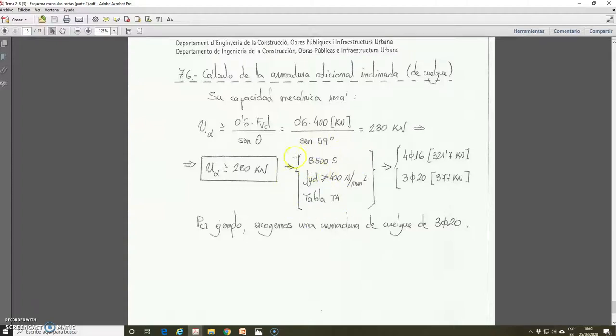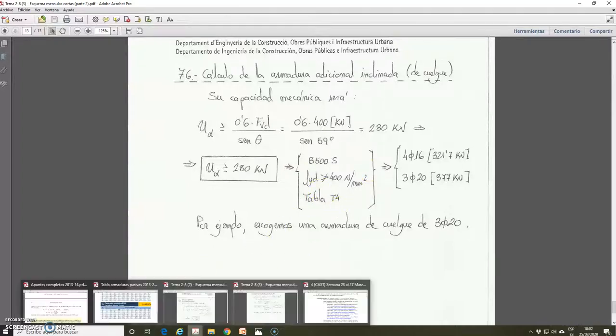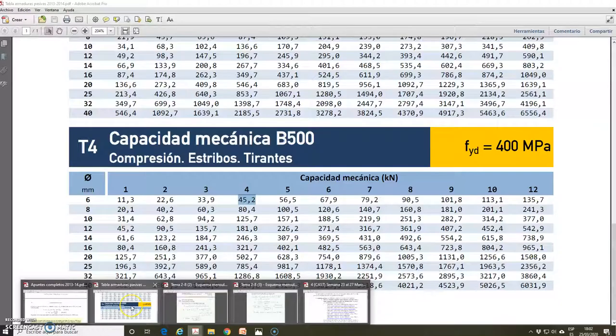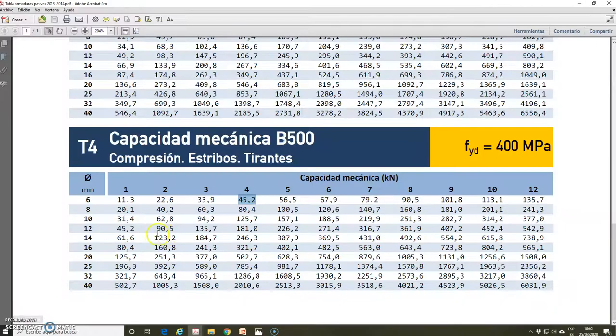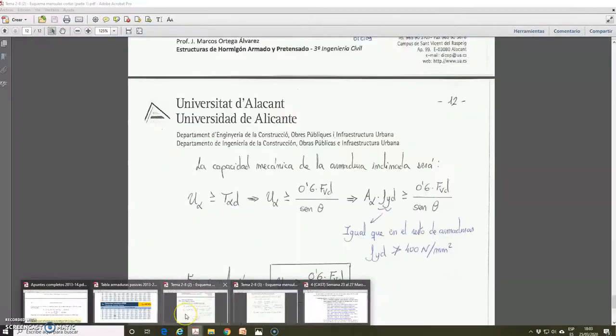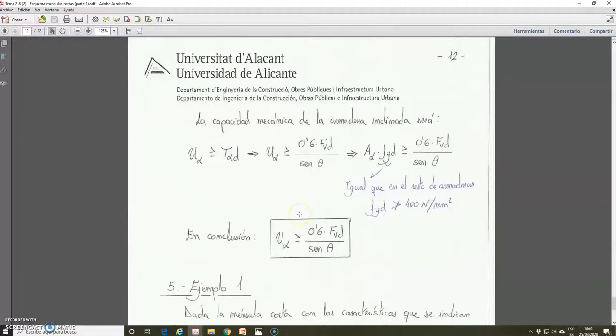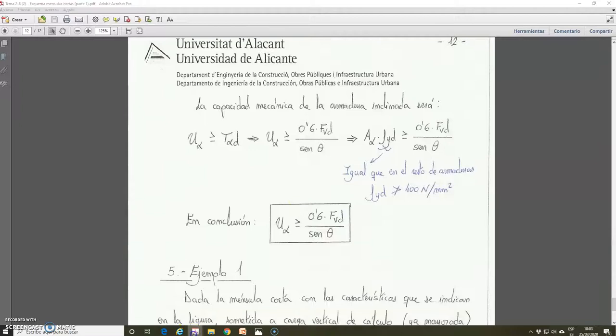For steel B500S, we go to the table T4, due to the limitation for the maximum design yield strength. And for this case, we can take, for example, four bars of 16, which is 321.7 kN. Or, for example, three bars of 20, which has a mechanical capacity of 377 kN. So both solutions are correct.